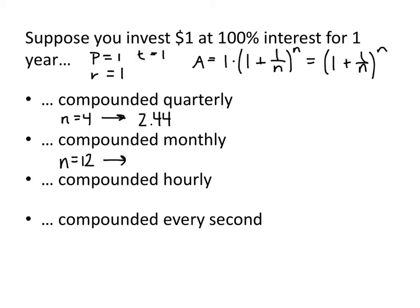So how much more money will we get if we compound monthly versus quarterly? Plugging the number 12 into our formula, we see that we get a little bit more. We get $2.61, which is a little more than the 44 cents that we got previously.